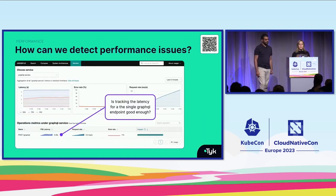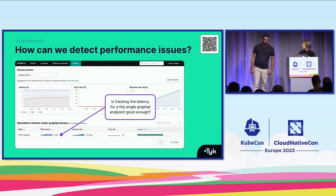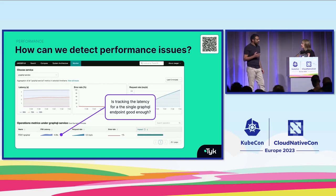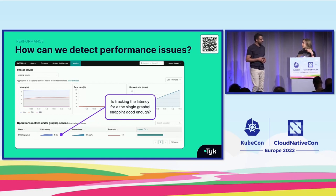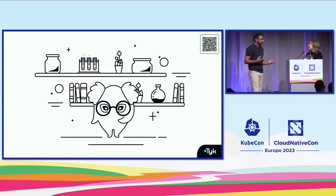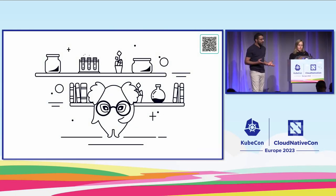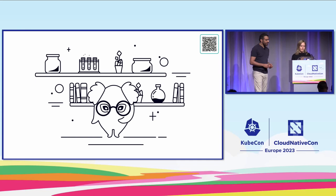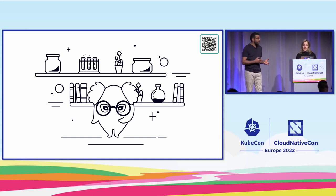We've spoken about errors, but what about performance issues? Can we use OpenTelemetry data in Jaeger to detect performance issues? All the different queries being sent to the GraphQL server are aggregated under the slash graphql endpoint. It's not that easy with GraphQL — we don't know what queries clients are sending us. One client can send multiple different queries, we could have multiple clients consuming this API each in their own way, and each client might have a different performance profile on a per-query basis.